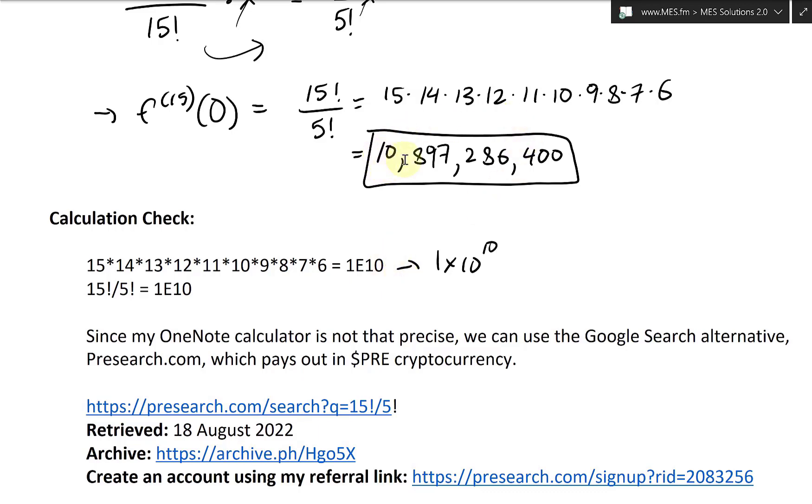This just equals to one times 10 to the power of 10. So this rounds it up to basically 10 with nine zeros. So we're on the right track, but we need a better calculator because it doesn't have, the calculator is not that good. It just rounds it up. And you can also do this 15 factorial divided by 5 factorial to get the same thing.